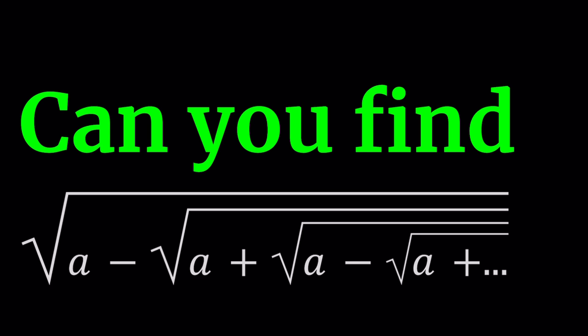What does 'in terms of a' mean? We're going to find a general formula, but can we find it? Let's find out. To evaluate this expression, I'm going to call it something. I need to name it — b, z, y, x? How about x? X is the unknown, so let's call this whole infinite expression x.